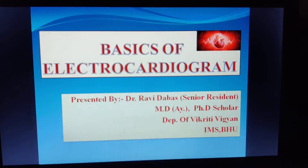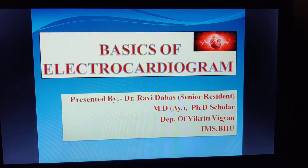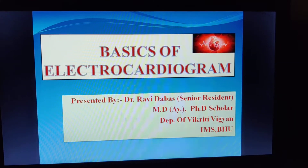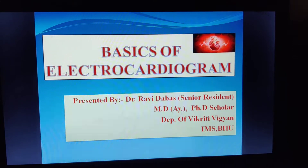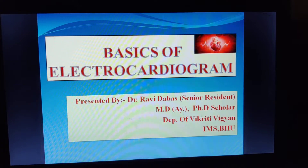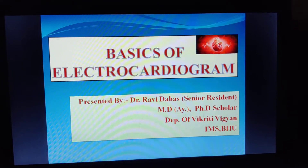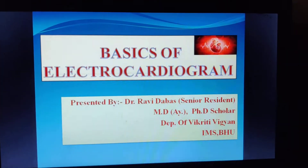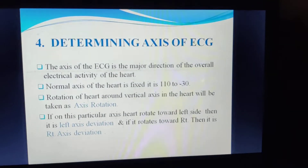Good morning everyone. Today I am going to discuss the remaining part of ECG. In basics of ECG Part 1, I discussed the conduction mechanism of heart, types of leads, ECG paper, ECG machine, how to evaluate heart rate on the basis of small square and large square, junctional beat, sinus beat, and determining the rhythm of heart. Now focusing on determining the axis of ECG.